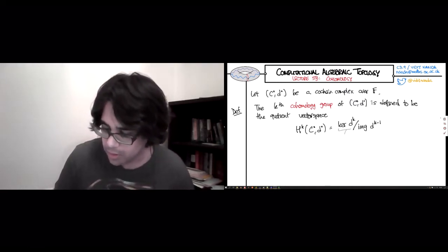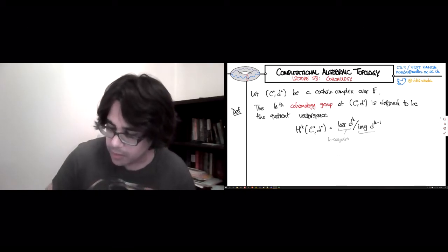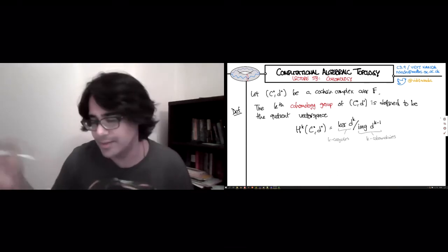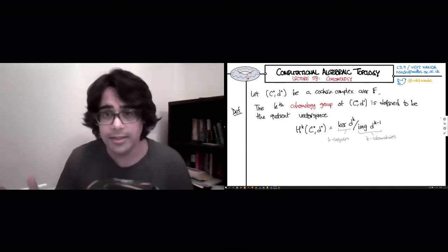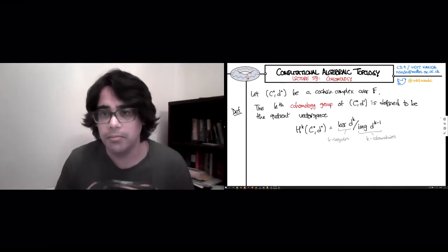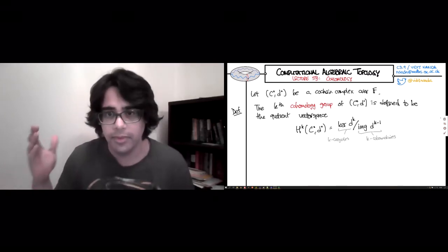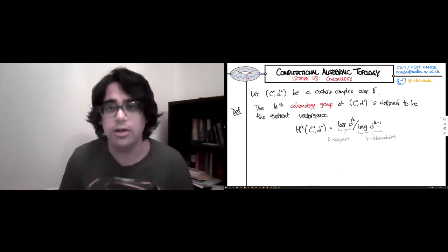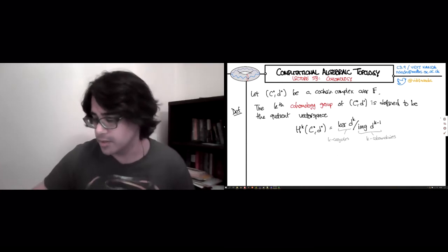This kernel is called the space of k co-cycles, and we'll call this the space of k co-boundaries. Although you should be warned that I think people might tend to call it k minus 1 co-boundaries. It's a whole thing, but this is the definition. And remember, because of duality, the fact that a co-chain complex composing two consecutive co-boundary maps gives you zero, the images actually live inside the kernels as subspaces, so the quotient vector space makes sense.